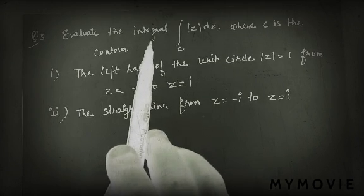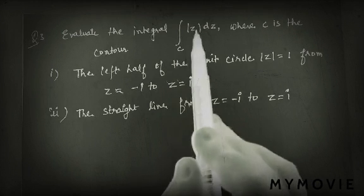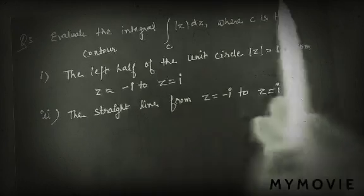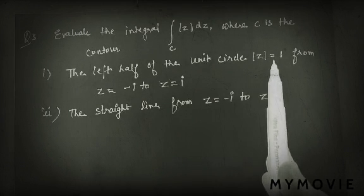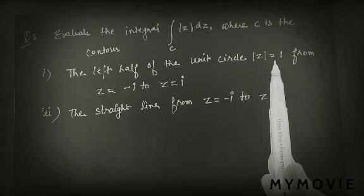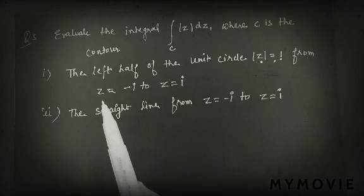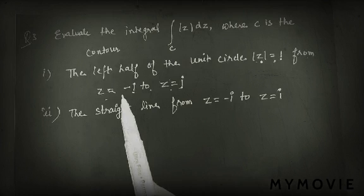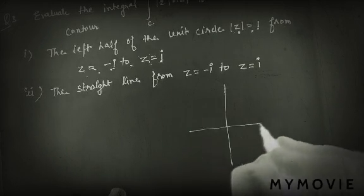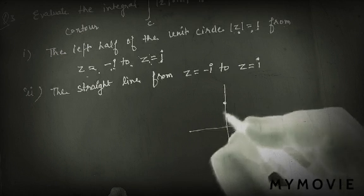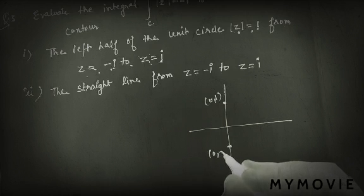Next question: evaluate the integral along C of |z| dz, where C is the contour. The first part is the left half of the unit circle, mod z equals 1, from z equals −i to z equals +i. Mod z equals 1 means a circle with radius 1 and center (0,0). Points: z equals i gives (0,1) and z equals −i gives (0,−1).